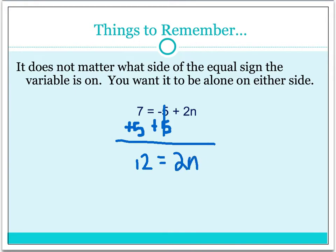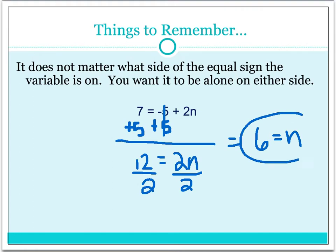Now we start again and ask, is there any more addition and subtraction? There's not. But we do notice a multiplication between the 2 and the n. To undo multiplication, we use division, so we'll divide by 2, and we'll end up with 6 is equal to n. If you wanted to check, you could plug that 6 back into your equation. 2 times 6 is 12, and 12 plus a negative 5 is 7.